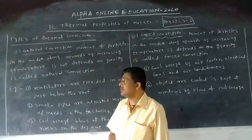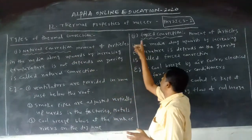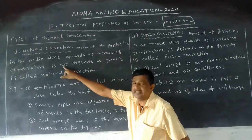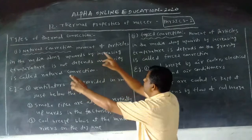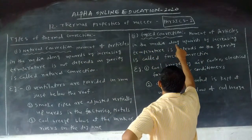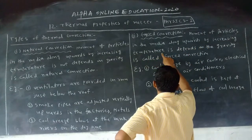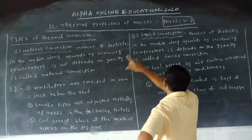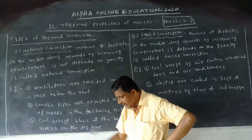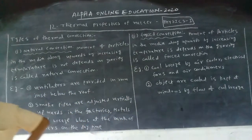Convection is of two types. The first is natural convection, the second is forced convection. The definition is similar, but here it depends on gravity. Movement of particles in the medium — upwards — by increasing temperature depends on gravity. That type of convection is called forced convection.